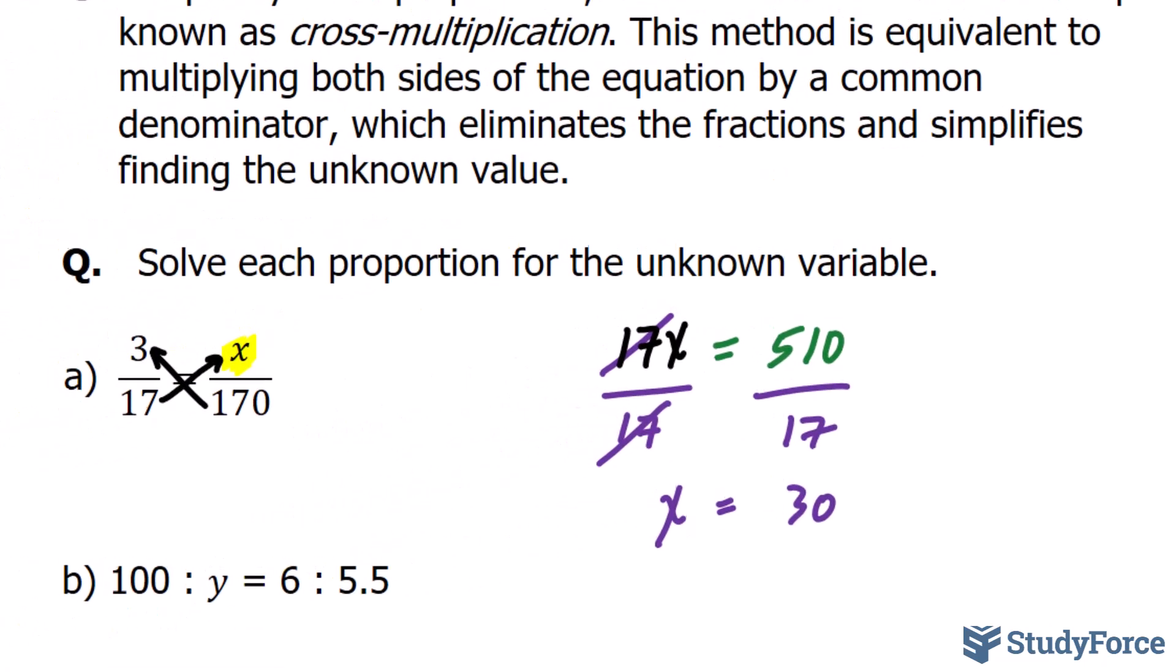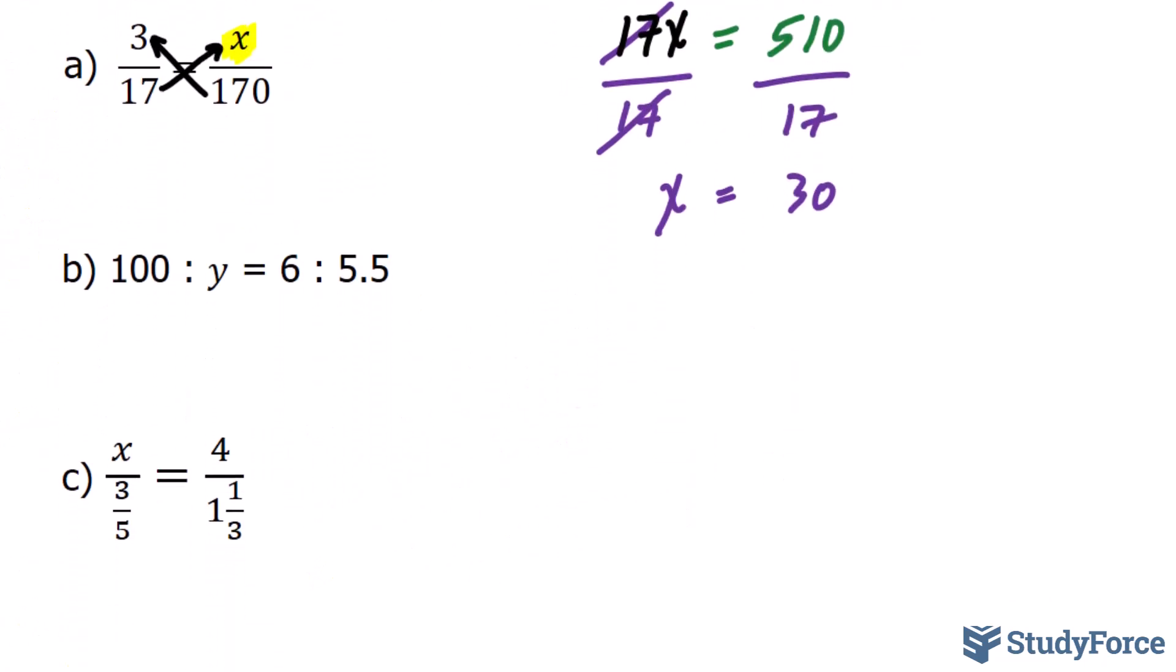Let's move on to question B. This time our proportion is written in ratio form. So the very first thing that I would advise is to rewrite this so that it looks like a fraction. 100 to y can be written as 100 over y. And similarly, 6 to 5.5 can be written as 6 over 5.5.